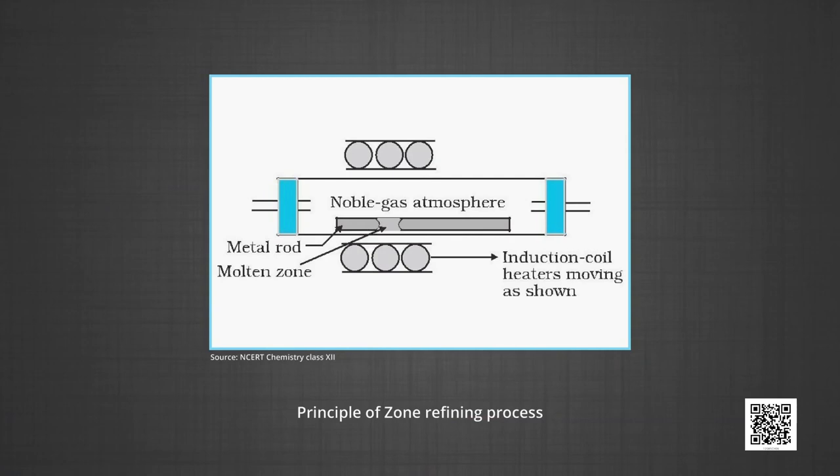The second method is zone refining. This method is based on the principle that the impurities are more soluble in the melt than in the solid state of the metal. A circular mobile heater is fixed at one end of the rod of the impure metal. The molten zone moves along with the heater, which is moved forward. As the heater moves forward, the pure metal crystallizes out of the metal and the impurities passed into the adjacent molten zone. The process is repeated several times and the heater is moved in the same direction.